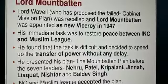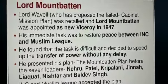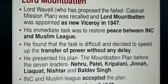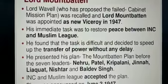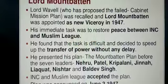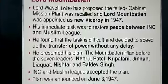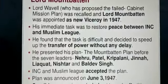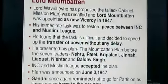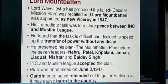He presented the Mountbatten Plan before seven leaders: Nehru, Patel, Kriplani, Jinnah, Liaquat Ali, Nishtar, and Baldev Singh. Both the Indian National Congress and the Muslim League accepted the plan, which was announced on June 3rd, 1947. Gandhi once again reminded everyone not to go for partition, as it may cause harm to the country.